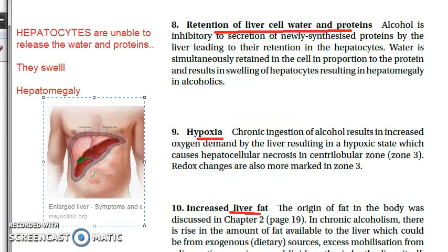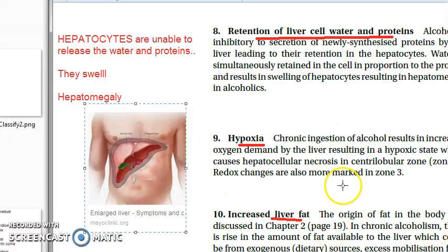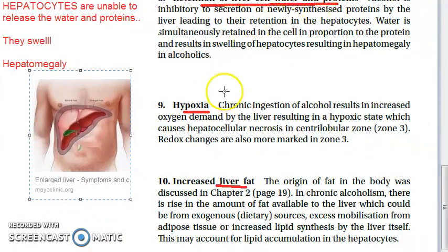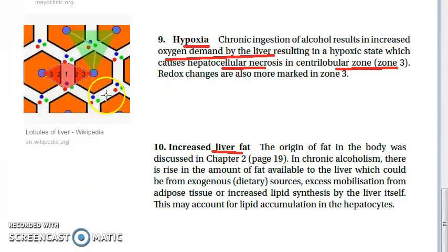Recall the three steps of alcoholic liver disease: steatosis (fatty liver) → hepatitis → fibrosis → cirrhosis. Ninth point: hypoxia. Chronic alcohol ingestion increases the oxygen demand of the liver, resulting in a hypoxic state. This causes hepatocellular necrosis specifically in the centrilobular zone — zone 3 — where oxygen cannot penetrate sufficiently, resulting in central lobular necrosis.